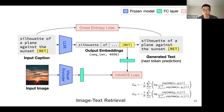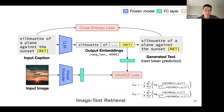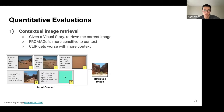During inference, the model produces RET tokens whenever it thinks appropriate, interleaving them into generated text. Even though training loss is simple, Fromage generalizes to many multimodal tasks because most of the model is frozen — retaining compelling abilities like few-shot in-context learning.